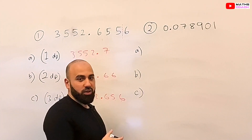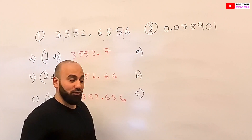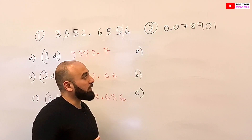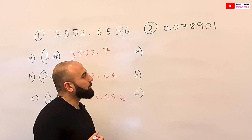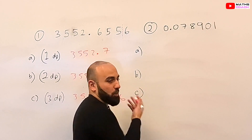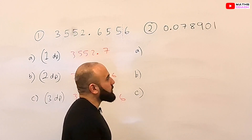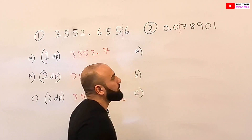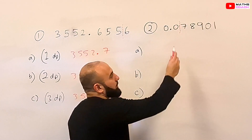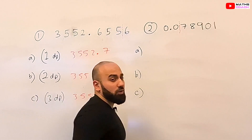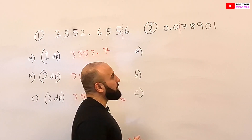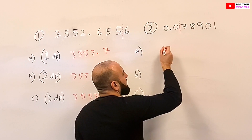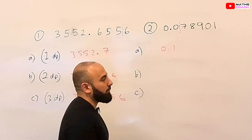Let's go through question number 2: rounding 0.078901 to one decimal place. We draw a line after the first number after the decimal point and look at the number next to it. Because it is 7 — which is 5 and above — this 0 will round to a 1. So our answer is 0.1.